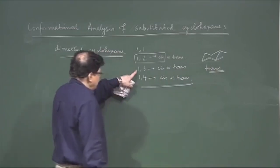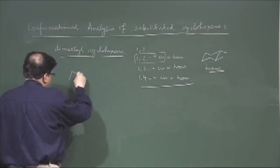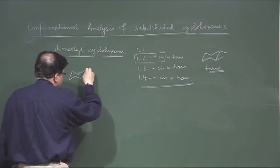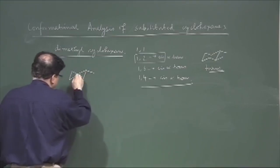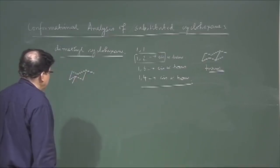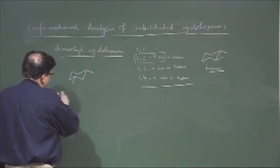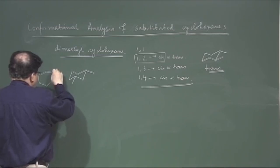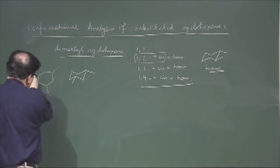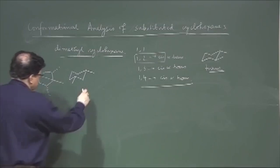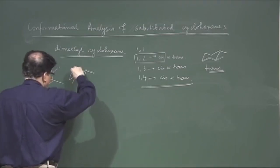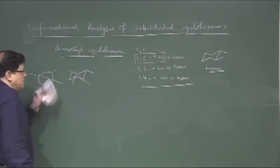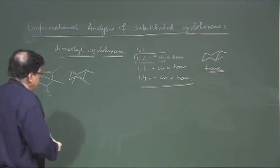For the 1,3-system: consider the cis compound. Cis means the best arrangement is both equatorial, and in the both-equatorial system you have a plane of symmetry. If you write it in the planar form, both substituents are alpha, making it cis. There is a plane of symmetry passing through this carbon and this carbon, so a plane of symmetry is present. Therefore, the cis compound is optically inactive.